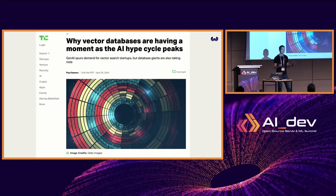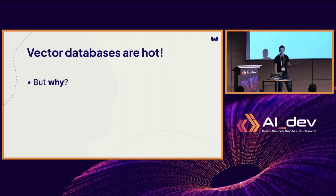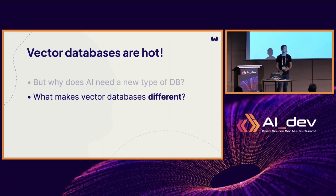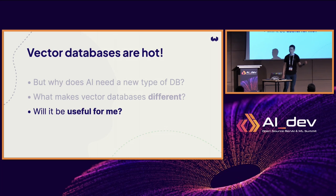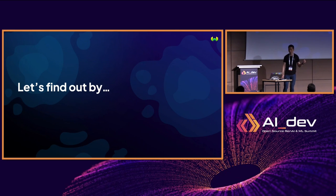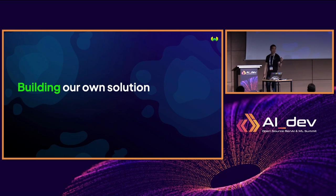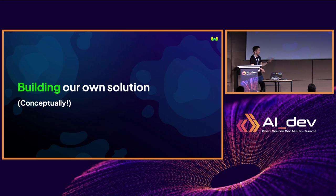It doesn't quite answer the question though, right? Why does AI require a different type of database? And more to the point, what makes those databases different from your traditional databases? And I'm sure this is what you're asking: what's in it for me? Are these useful? How can I make use of them? So here's what I thought we could do together for the next 25 to 30 minutes. Let's find out if those things are useful by building our own solution. We've only got 25 minutes — you're probably not going to build an entire database in 25 minutes — so we'll just do this conceptually.